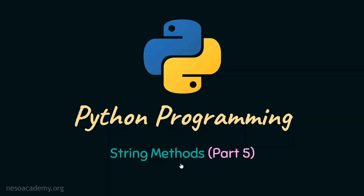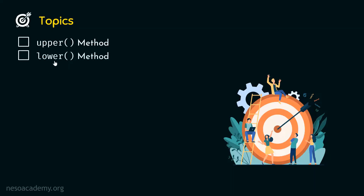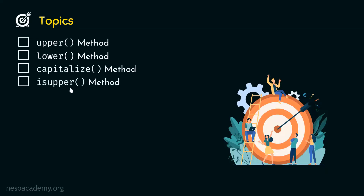In the last presentation, we understood the join method and replace method. Now, we will understand a few more methods in this presentation. The topics are: upper method, lower method, capitalize method, isupper method, and islower method. We will understand all these methods in detail.